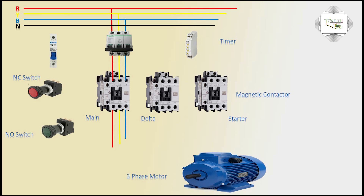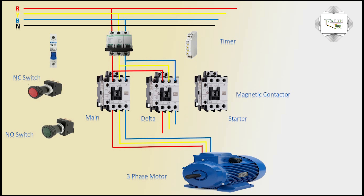Output to industrial motor connection. Delta magnetic contactor connects phase input, same connection for delta magnetic contactor outgoing motor connection. Three-phase industrial motor terminals V1, V2, U1, U2, W1, W2 connection is complete.